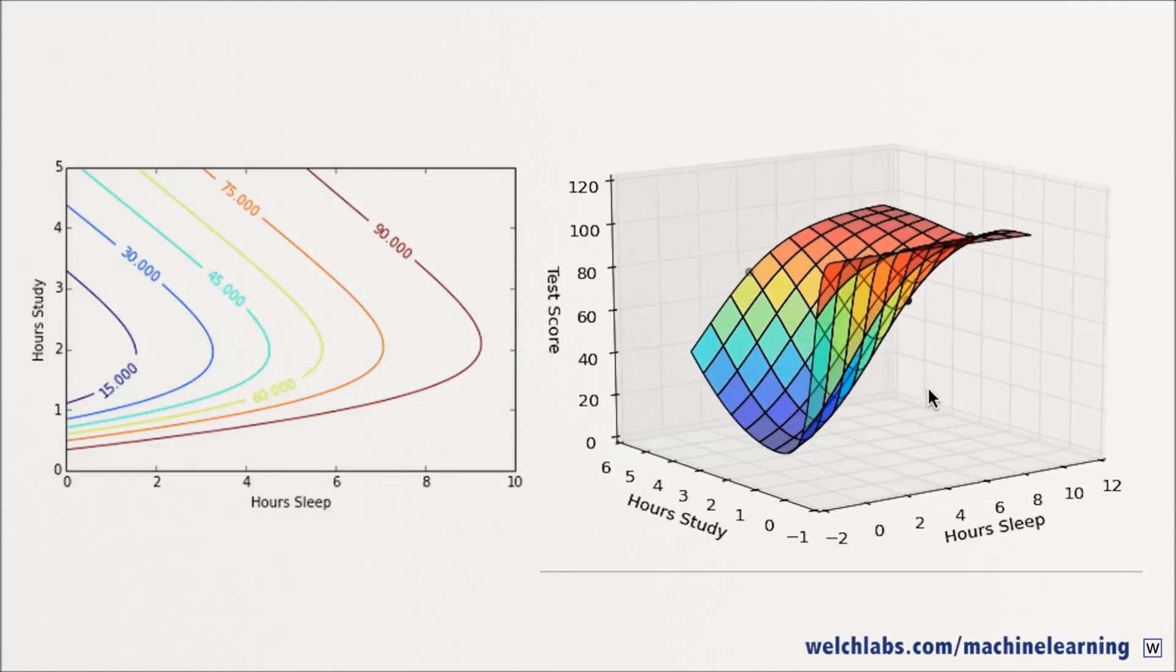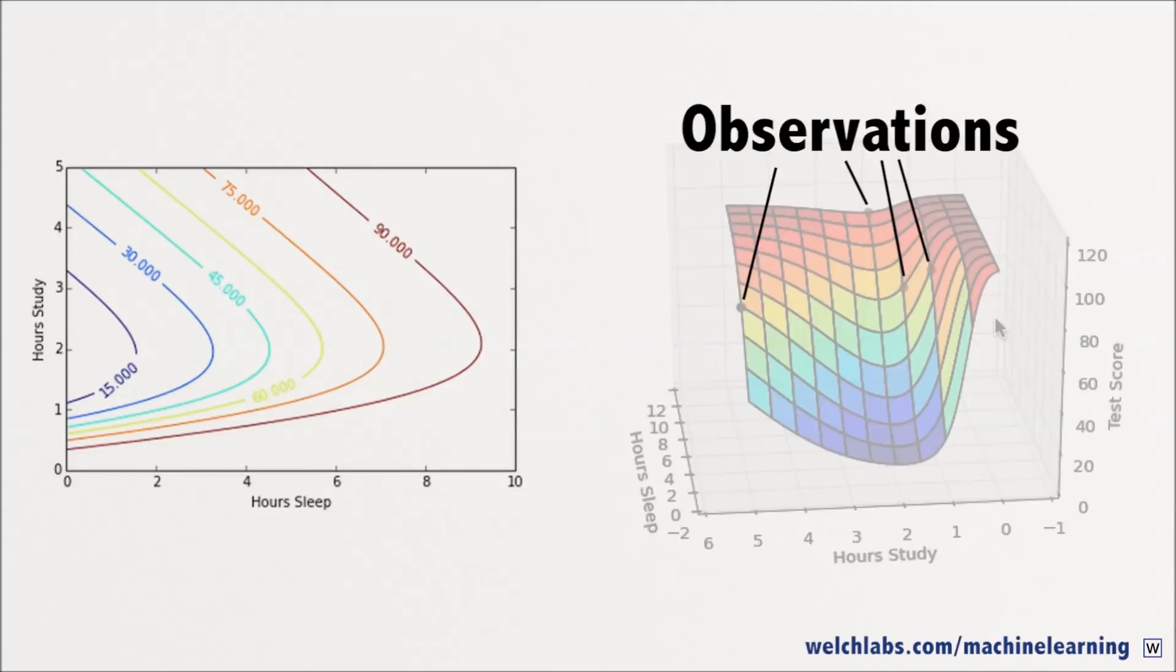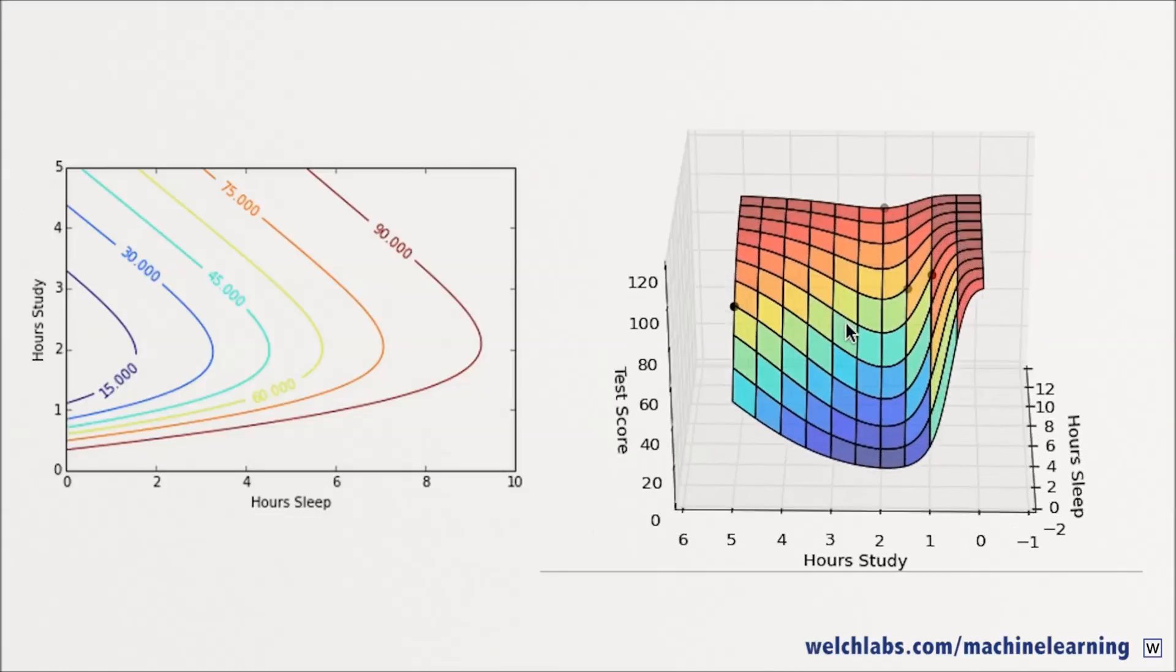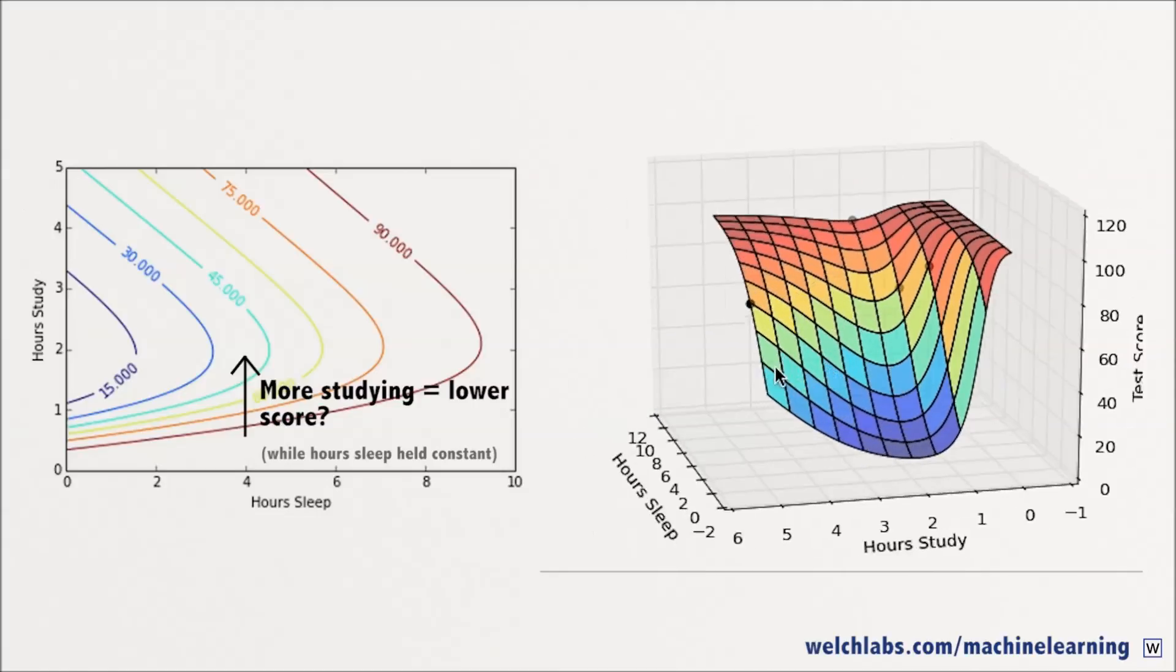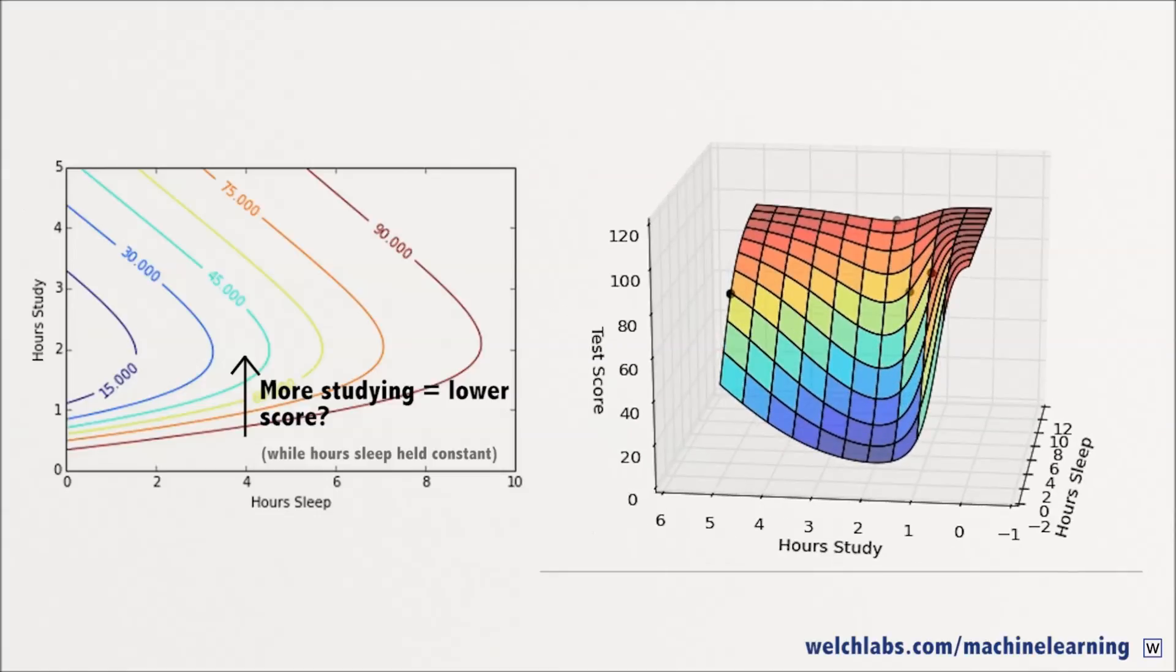Neural networks are really powerful models, and we see here that all that power has been used to fit our data really closely, which creates a problem. Our model no longer is reflective of the real world. According to our model, in some cases studying more will actually push your score down, which seems unlikely, hopefully studying more will not decrease your score.